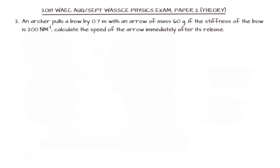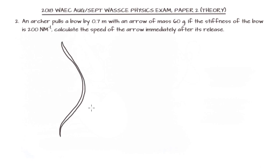In this question, we are told that an archer pulls a bow by 0.7 meters with an arrow of mass 60 grams. The stiffness of the bow is given as 200 newtons per meter, and we are to calculate the speed of the arrow immediately after its release. The bow in its resting position has a stiffness k of 200 N/m. When the string is pulled backward by an extension of 0.7 meters, the mass of the arrow is 60 grams, which is 0.06 kilograms.